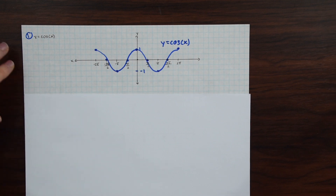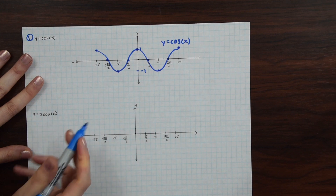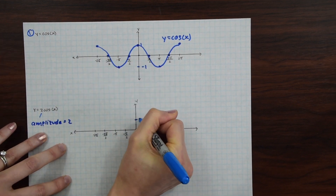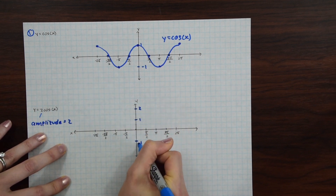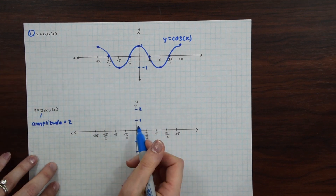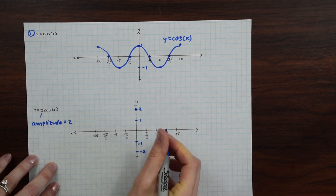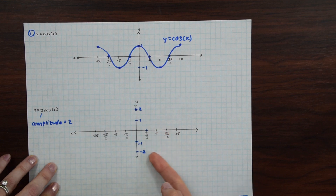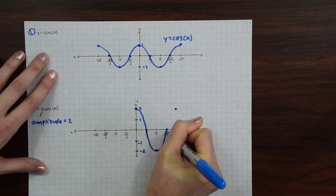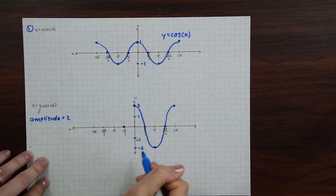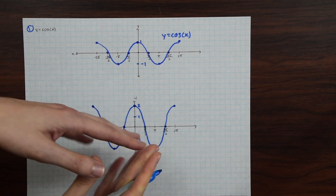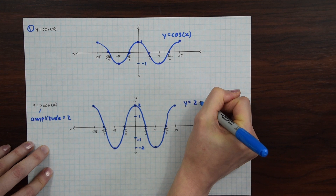For the next step, we incorporate the amplitude of 2. We do the same thing as before, but the graph now reaches up to 2 and down to minus 2. The starting point shifts from (0, 1) to (0, 2). The zero-crossing at π over 2 stays the same, π goes all the way down to minus 2, and 2π goes back up to 2. We connect the dots and get a taller V-shape on both sides. We label this graph y equals 2 cosine of x.